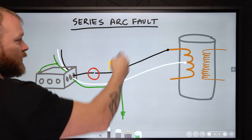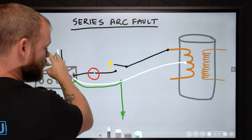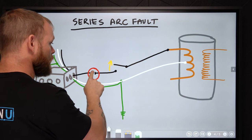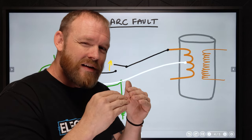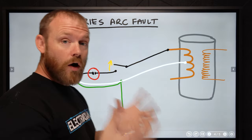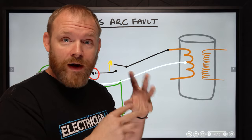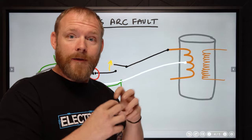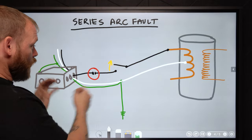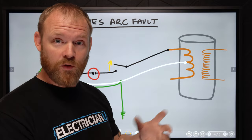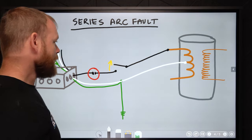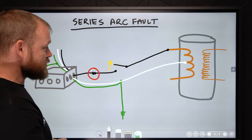In a series arc fault, the fault is in a conductor in series — like two screws with a loose termination that aren't quite touching but arc across the gap. Arc fault breakers have a small board with logic that recognizes the signature of a series arc and trips the breaker. The breaker part still works normally for thermal and magnetic trips, but it also has the added capability to detect what series arc characteristics look like and open the circuit when those occur.